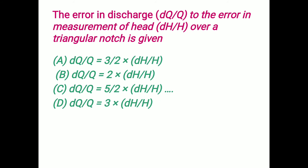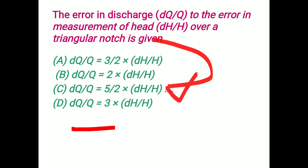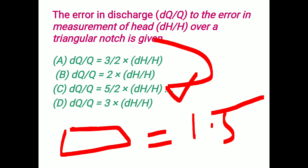The error in discharge DQ/Q to the error in measurement of head DH/H over a triangular notch: the error in discharge for a triangular notch is DQ/Q = (5/2) × DH/H, i.e., 2.5 × DH/H. In the case of a rectangular notch, it is 1.5 × DH/H (i.e., 3/2 × DH/H). Option C is the correct answer.